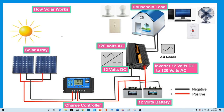Here are the main steps on how a solar panel works for your home. A solar array can be defined as solar panels arranged in a group to capture the maximum amount of sunlight to convert it into usable electricity.